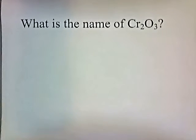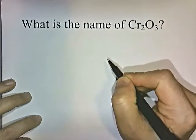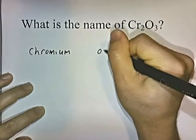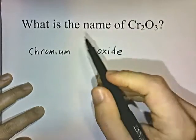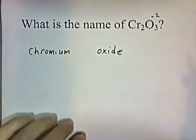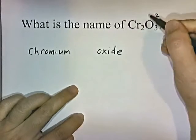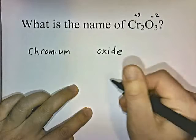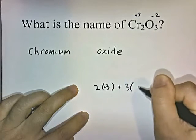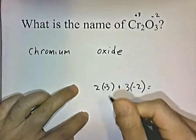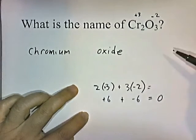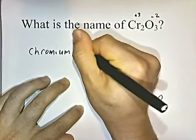What is the name of Cr2O3? Chromium is a transition element, so we must include a Roman numeral. Oxygen is in group 6, so it has a negative two charge. Three oxygens give a total charge of negative six, so the two chromium atoms must contribute positive six to balance — meaning each chromium has a plus three charge. Therefore, Cr2O3 is called chromium 3 oxide.